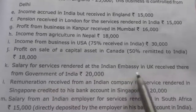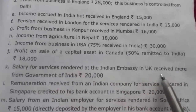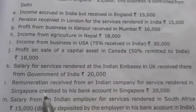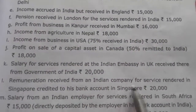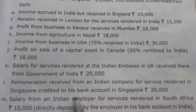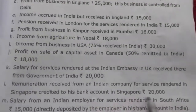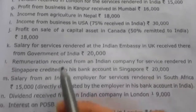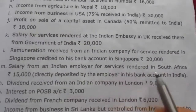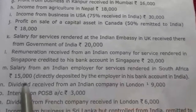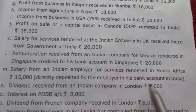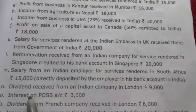Further items: salary for services rendered at the Indian embassy in UK received there from the Government of India Rs. 20,000; remuneration received from an Indian company for services rendered in Singapore credited to his bank account in Singapore Rs. 20,000; salary from an Indian employer for services rendered in South Africa Rs. 15,000, directly deposited by the employer into his bank account in India.